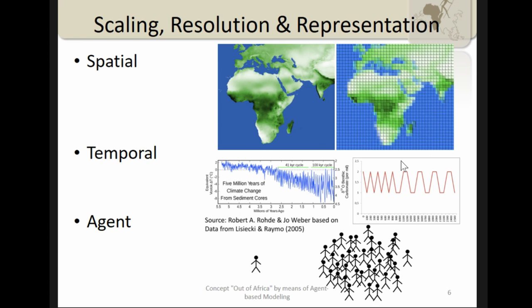Now my thoughts on scale. For me, the basis of the question always rises from the research question — for example, how or why did early hominins disperse out of Africa. As 'out of Africa' already implies, it involves Africa and something outside of Africa, so at least two continents. This makes it a continental-scale question, which already has implications for the agents I use. At this stage I'm not interested in individuals, but in populations, and not in years or months but rather geological timescales or glacial cycles.